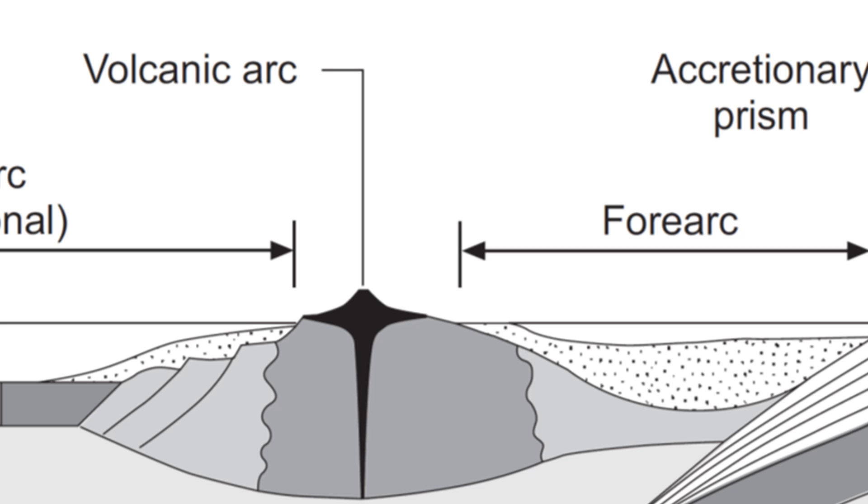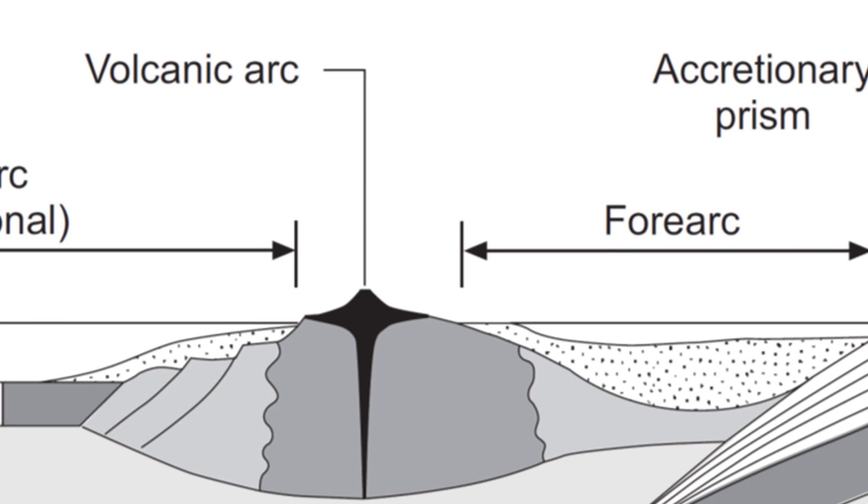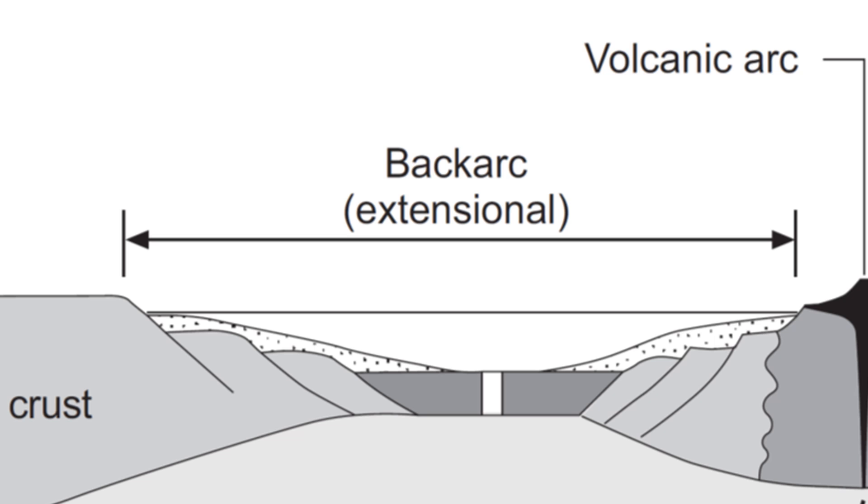Another type of basin, called a back arc basin, forms on the continental crust side of the volcanic arc. It forms due to crustal extension. And like the forearc basin, its main source of sediment is the volcano chain. It may also develop material from the underlying continental crust.